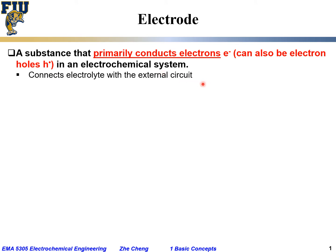The electrode serves the purpose of connecting the electrolyte with the external electrical circuit. Remember, electrochemistry is about the interaction or interrelationship between chemical changes and electrical effects. That's why we need an electrode to connect the electrolyte — which conducts primarily ions, charged ions, positive ions which we call cations, and negative ions which we call anions — with the external circuit. It could be a light bulb, for simplicity, or it could be another power source.